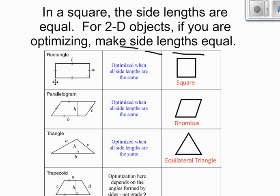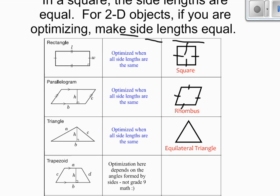So we've already seen that for a rectangle, it's optimized when the side lengths are the same. And we call that a square. A parallelogram is also optimized when the side lengths are the same. And when you make the side length of a parallelogram all equal, you have something called a rhombus. And a rhombus is an optimized parallelogram.